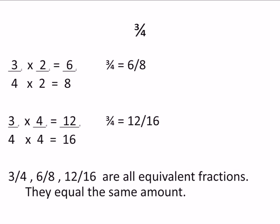And I multiply the bottom number, the denominator, by 2. 4 times 2 is 8. Now why is 3 fourths equal to 6 eighths? Because we multiplied it by 1. 2 over 2. The fraction 2 over 2. What's that? It's the number 1.